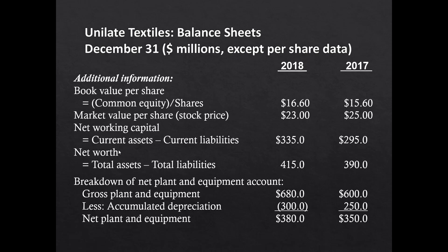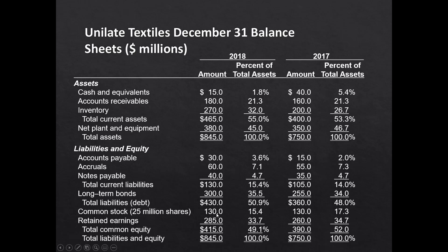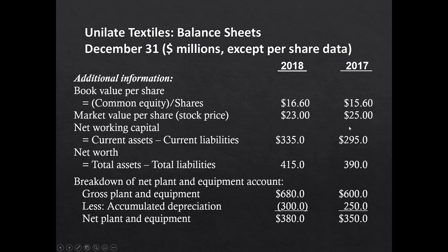Net worth — also known as stockholders' equity — is total assets minus total liabilities. Unilate's total assets are $845 million, total liabilities are $430 million ($130 million current liabilities plus $300 million long-term bonds), giving net worth of $415 million — the sum of $130 million invested by stockholders plus $285 million retained earnings. Even so, book value went up while market price went down from 2017 to 2018.